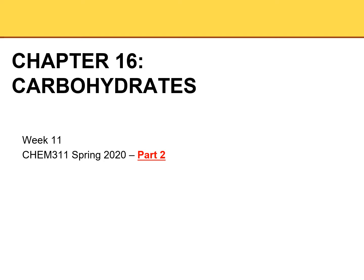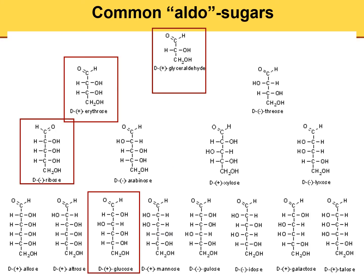Let's get started. Today we'll continue with chapter 16 on carbohydrates. We said you can have three-carbon, four-carbon, five, six, seven carbon sugars — they could be aldo or keto. Let's look at all the sugars.